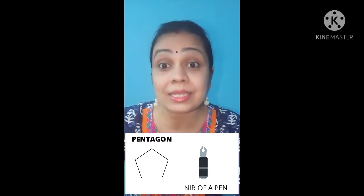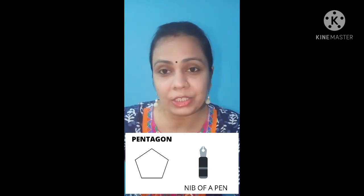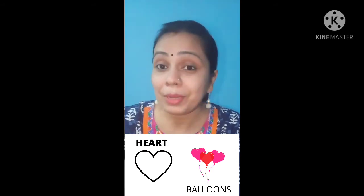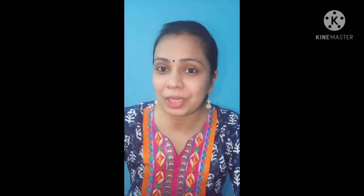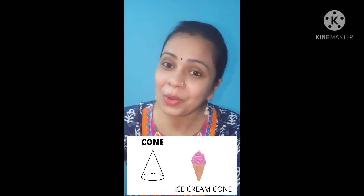This is pentagon. Which shape is this? This is pentagon. Nib of a pen is pentagon in shape. This is heart shape. Balloons are heart shape. This is cone shape. Which shape is this, children? Ice cream cone is cone shape.